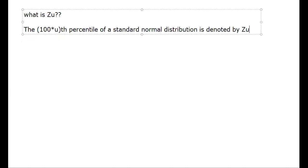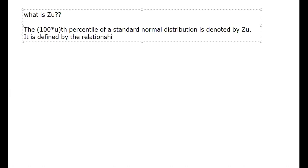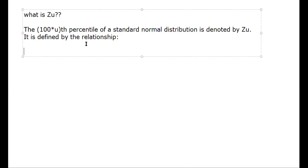It is defined by the relationship: probability Z less than Z_u equals U, where Z is normally distributed with mean 0 and variance 1, written as Z ~ N(0, 1).